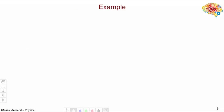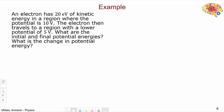Now let's do an example. An electron has 20 eV of kinetic energy in a region where the potential is 10 volts. The electron then travels to a region with a lower potential of 5 volts. What are the initial and final potential energies, and what is the change in potential energy?